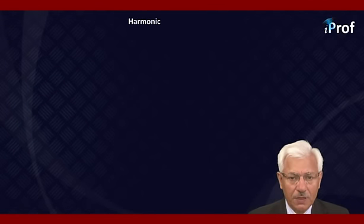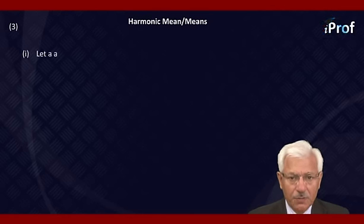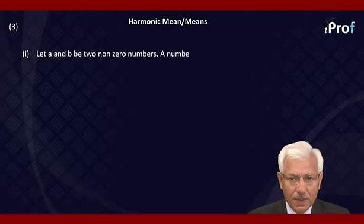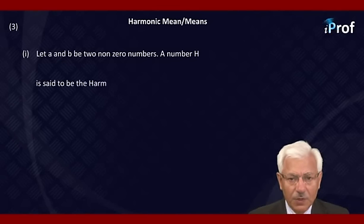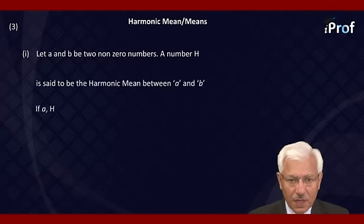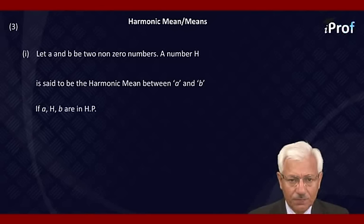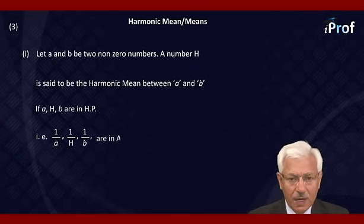Let us take up how we find the harmonic mean. Let A and B be two non-zero numbers. A number H is said to be the harmonic mean between A and B if A, H, and B are in HP. Consequently, one upon A, one upon H, and one upon B are in AP.